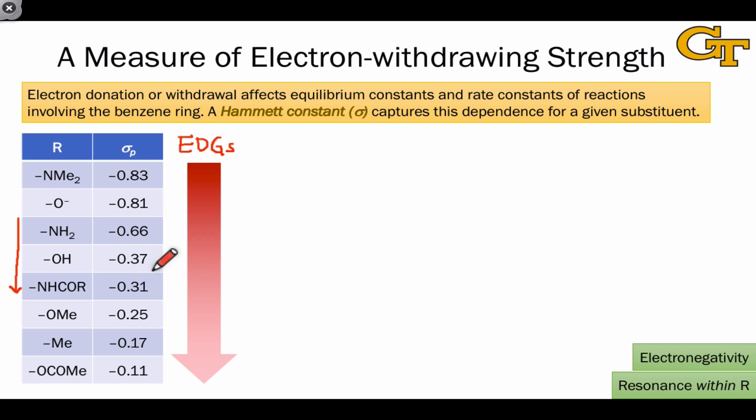While the amide is electron-donating overall, it's not as strongly donating as a plain vanilla amine because the lone pair that would be donated to the aromatic pi system is also participating in what we might think of as competitive resonance involving the carbonyl group. Because that lone pair is being pulled on by two electron-withdrawing groups, each electron-withdrawing group gets, in a rough sense, about half as much of the electron density.